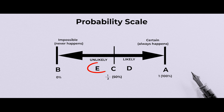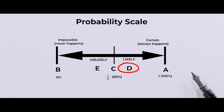Then you can see E — there it is 'unlikely.' Here we put an event which you feel is unlikely to happen. Then in D, you will see it is written 'likely.' So if you think an event is likely to happen, you put those events in D, that is between C and A.